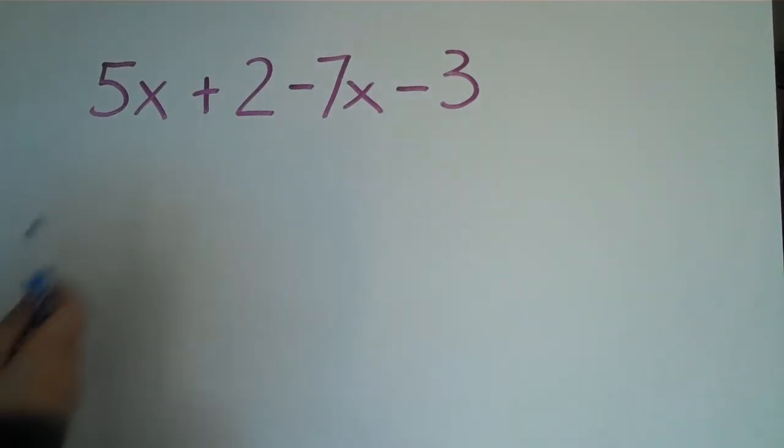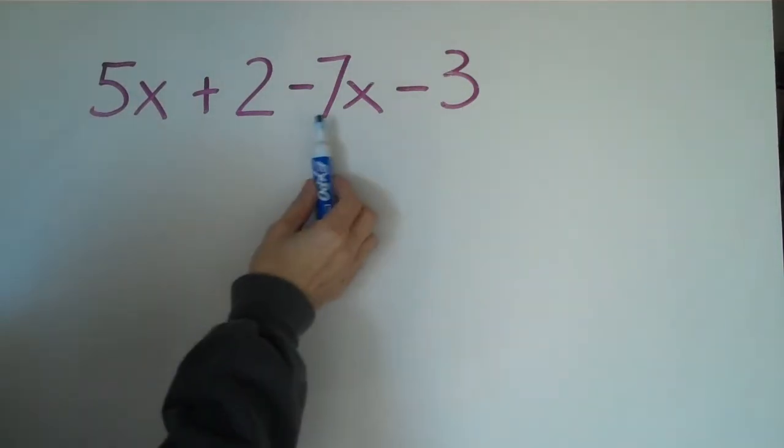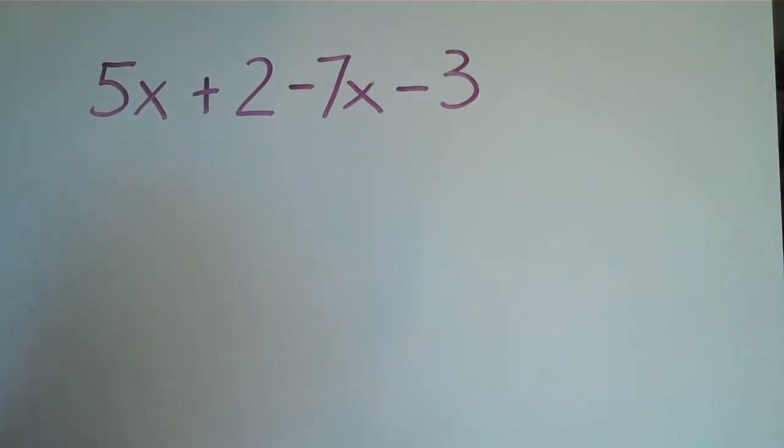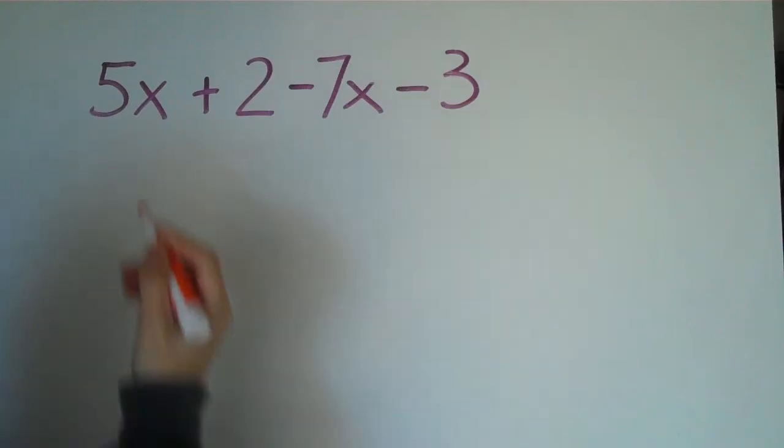Okay, so let's look at a couple examples. In this example, we have 5x plus 2 minus 7x minus 3. Let's pick this apart a little bit. What are the terms?